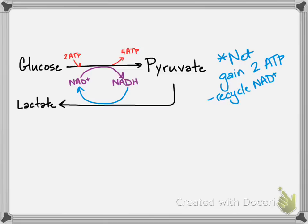So this is called lactic acid fermentation. It's done by our muscle cells, but it can't be done by things like our brain, which is why brain cells will die first, often when you're suffocating.